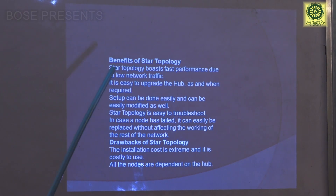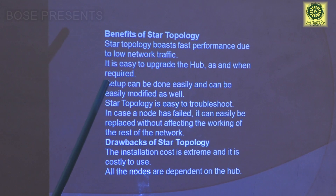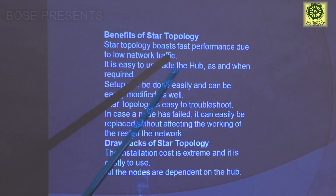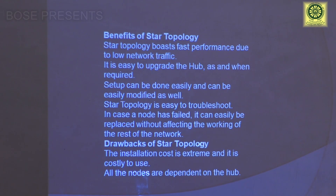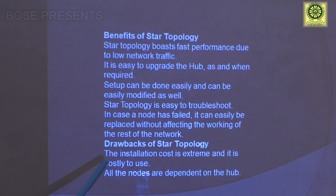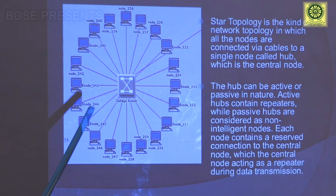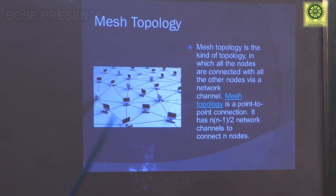The benefits of star topology: it is the fast-performing network topology under low network traffic. When the hub is at full speed, star topology may provide a higher rate of data transmission. The drawbacks: installation cost is high and it is costly to use. If the hub is damaged, all nodes will be disconnected and transmission will stop.